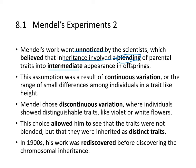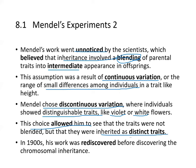This belief was a result of continuous variation — the range of small differences among individuals in traits like height. Mendel chose instead the idea of discontinuous variation, where individuals showed distinguishable traits, like either violet or white flowers but not pink. That choice allowed him to see that traits were not blended but inherited as distinct traits. In the 1900s, his work was rediscovered before the discovery of chromosomal inheritance.